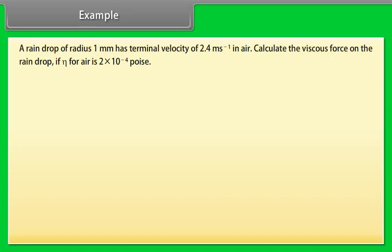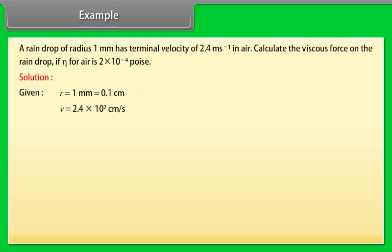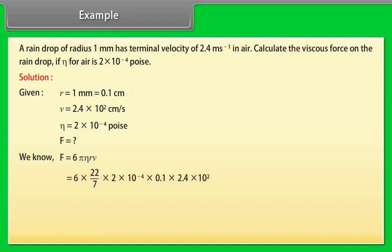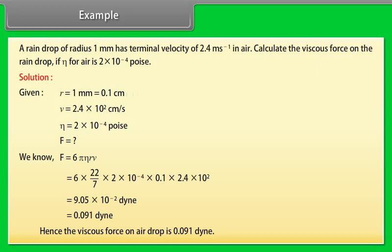Example: A raindrop of radius 1 mm has a terminal velocity of 2.4 m/s in air. Calculate the viscous force on the raindrop if η for air is 2 × 10⁻⁴ poise. Given: R = 0.1 cm, V = 2.4 × 10² cm/s, η = 2 × 10⁻⁴ poise. Using F = 6πηRV, we get F = 9.05 × 10⁻² dyne = 0.091 dyne. Hence, the viscous force on the raindrop is 0.091 dyne.